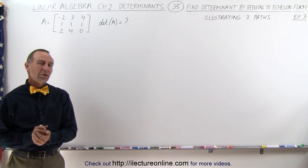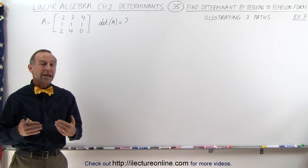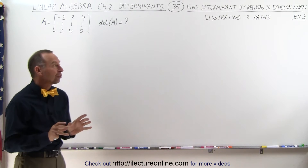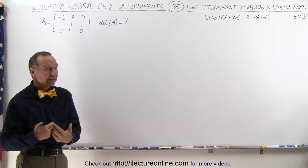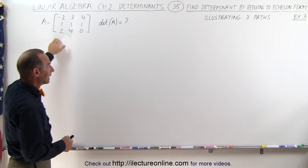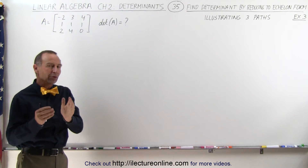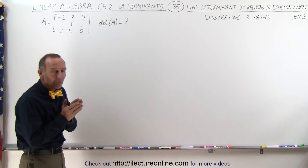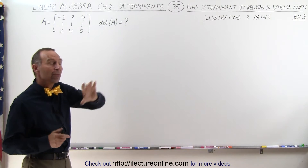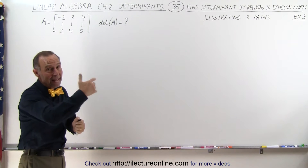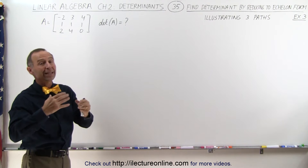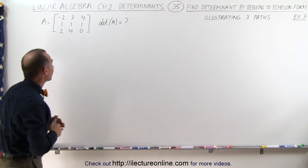Welcome to ElectronLine. To illustrate how this method works and how we need to adjust the answers at the end to make sure we get it right, we're going to do one problem in three different ways. We're going to start in the same fashion, but then branch out and finish the problem in three different ways. We'll get three different answers initially, but when we adjust appropriately, we should get the same result in each case.